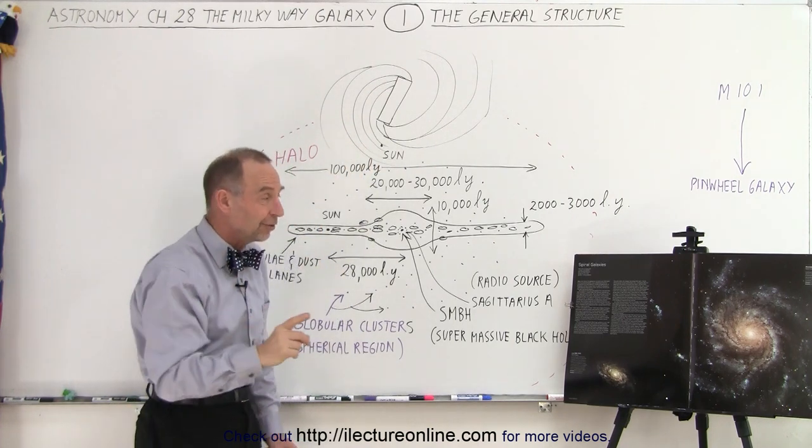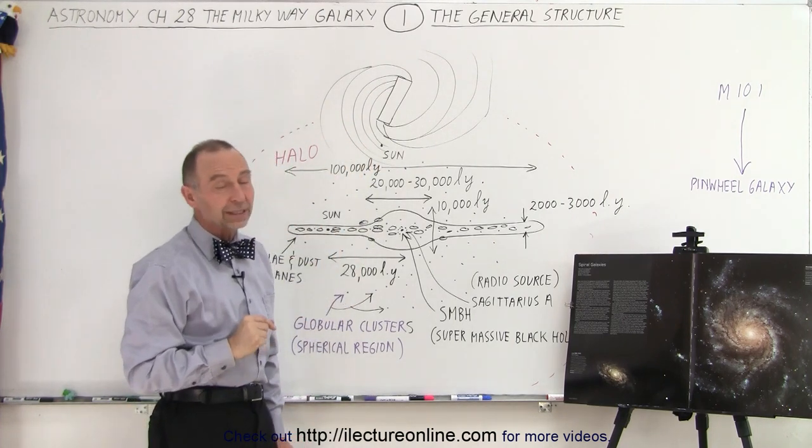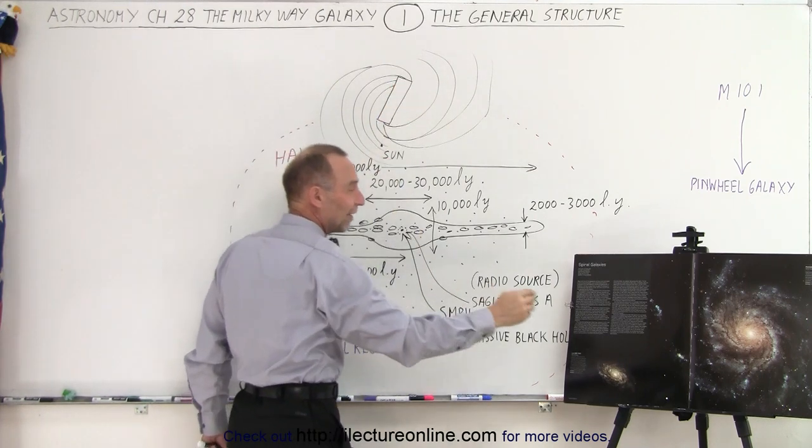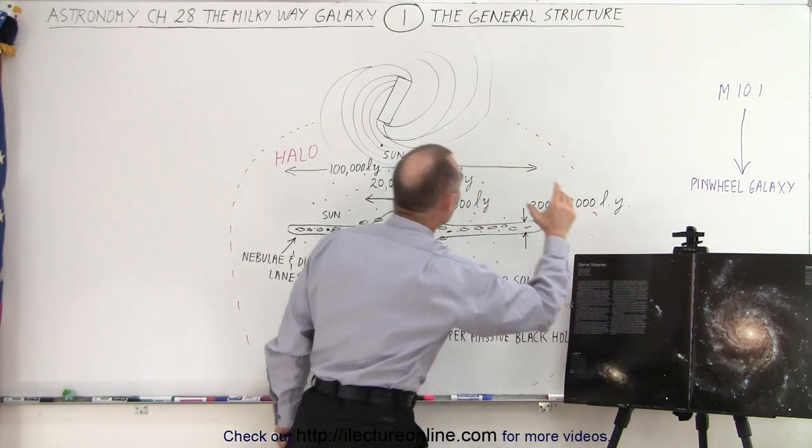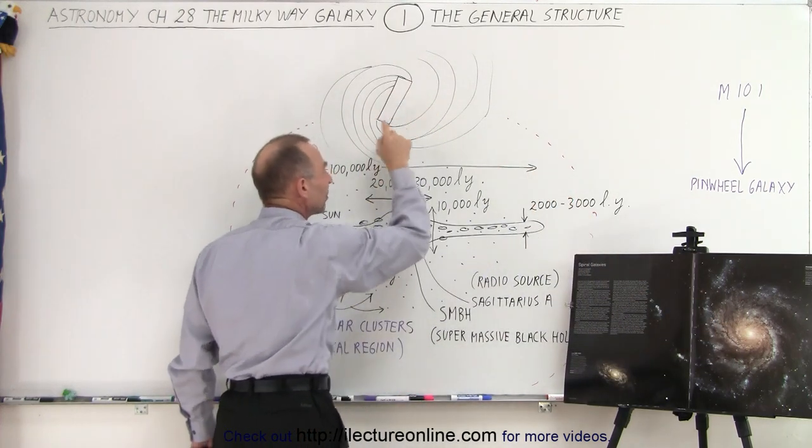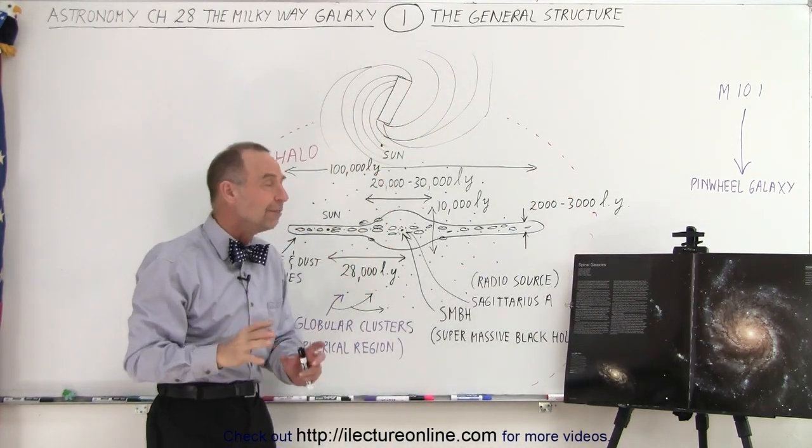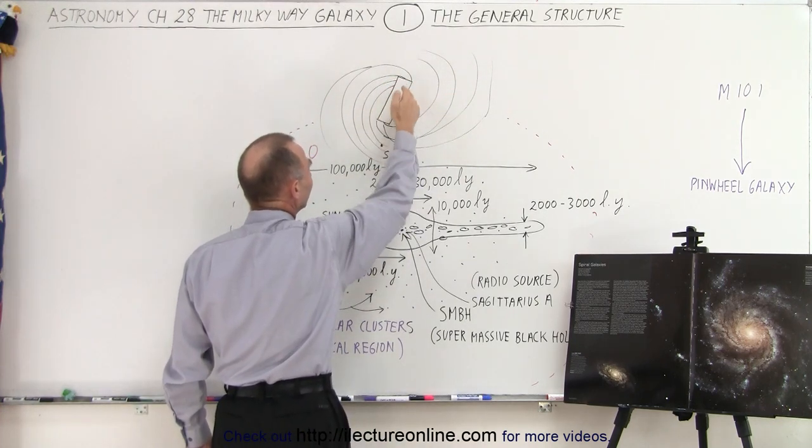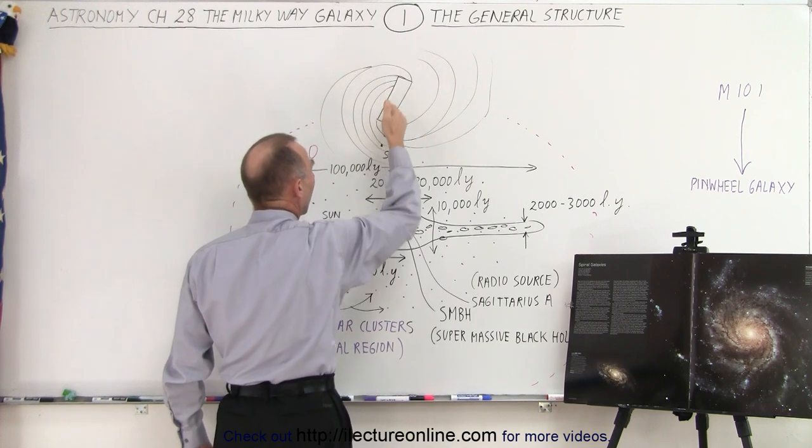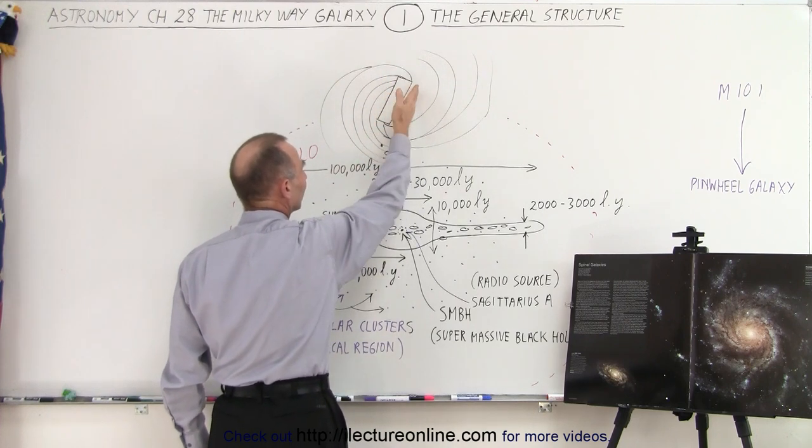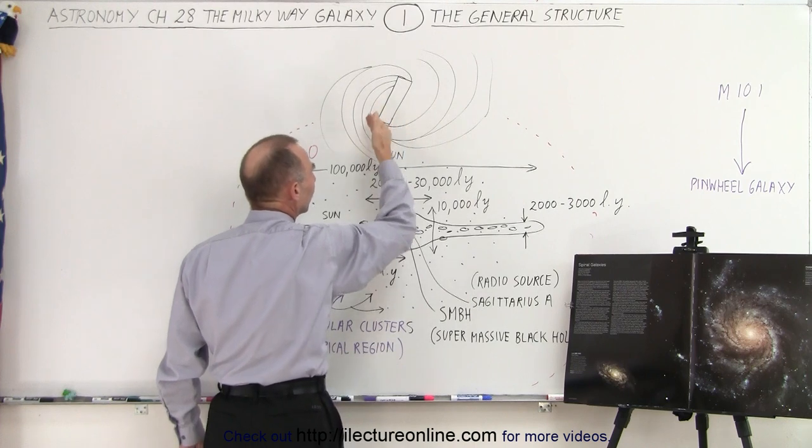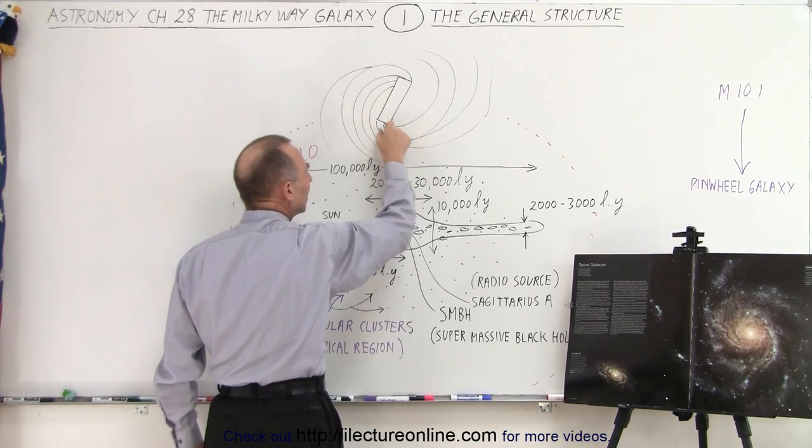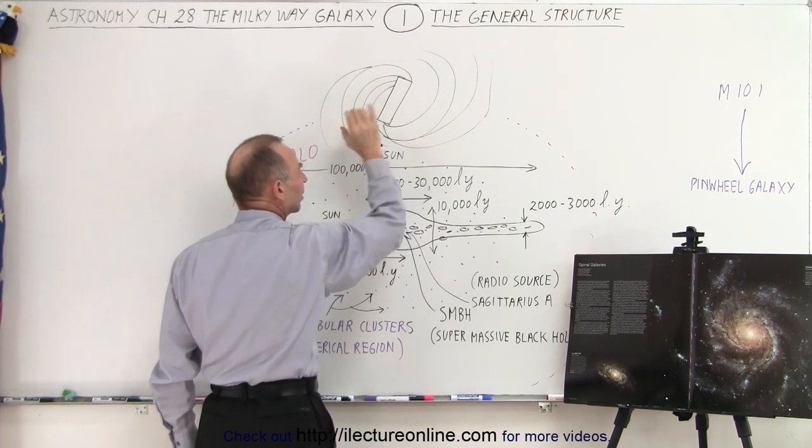What we do believe may be different from the Pinwheel Galaxy is that we think our galaxy has a bar-shaped center. Instead of having a spherical-shaped center, we have more of a rectangular-shaped center. Then we have the emanating spiral arms that come off the bar, typically mostly from the opposite ends of the bar, not from the sides. We have these spiral arms, and our sun is located in between two of the major spiral arms.